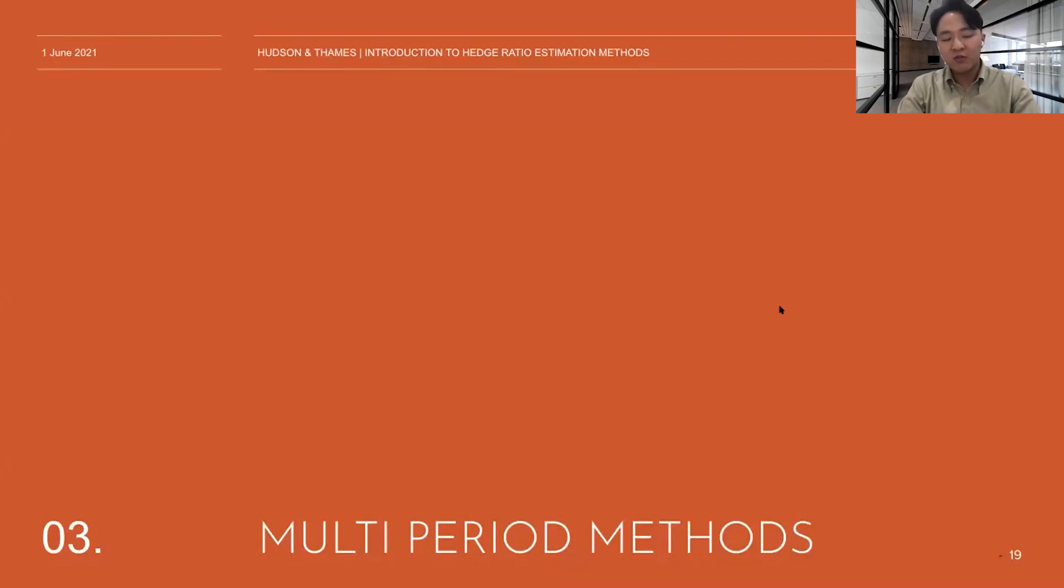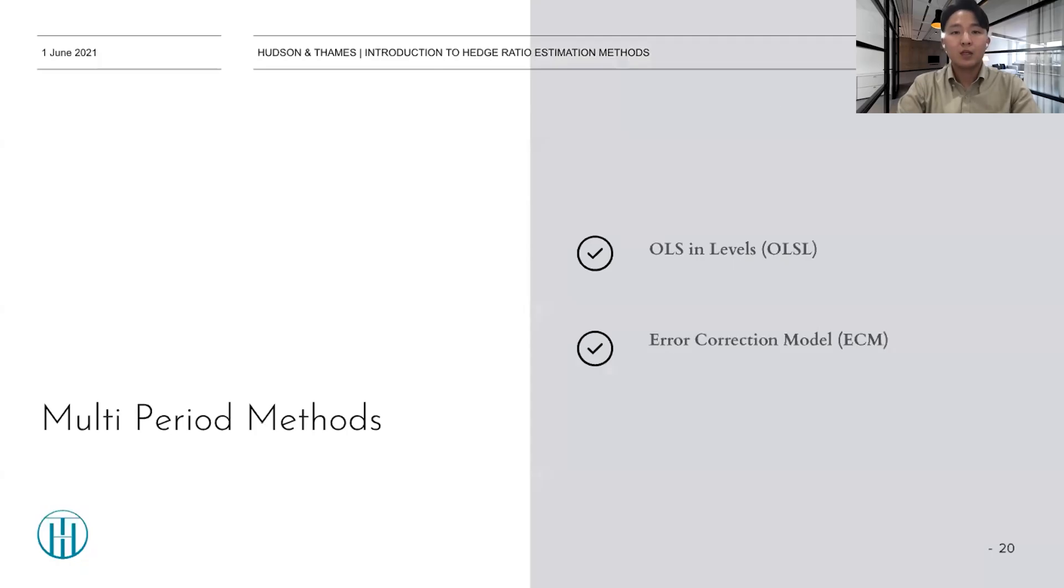So, now we move from single period to multi-period method. So, there are two methods I want to share with you today. There are a lot of multi-period methods out there, so you should probably look for others as well. But the first one I want to share is OLSL, which is OLS in levels. And the second one I want to share is error correction model, which is simply ECM.